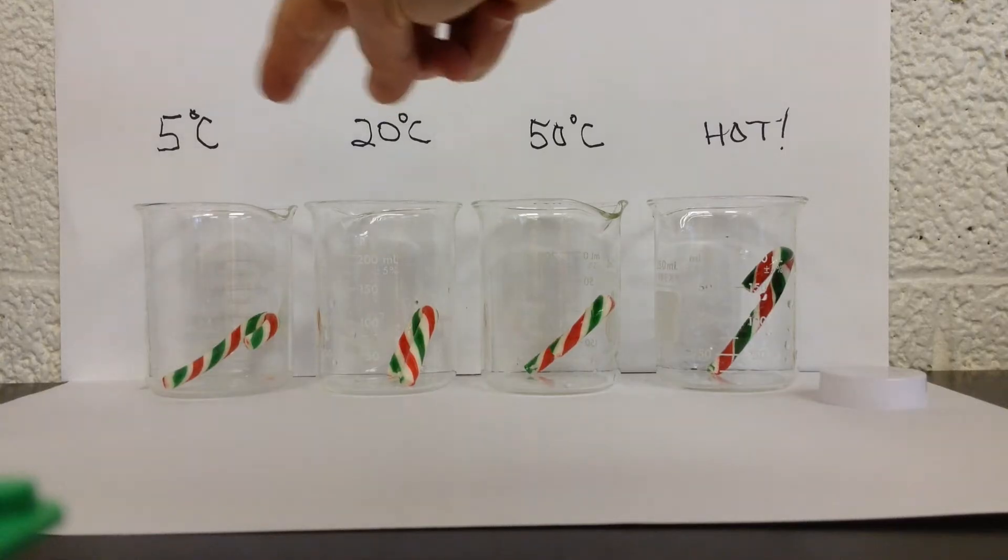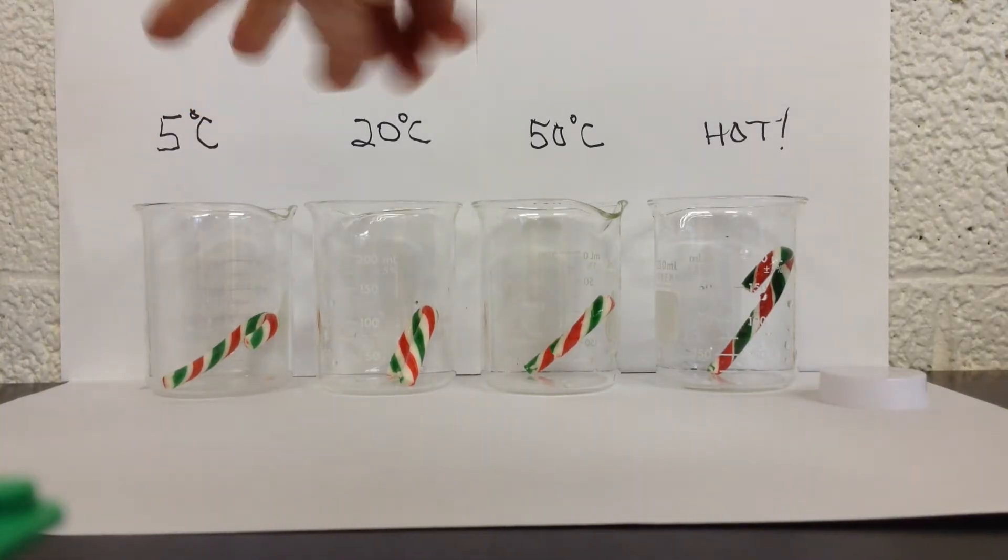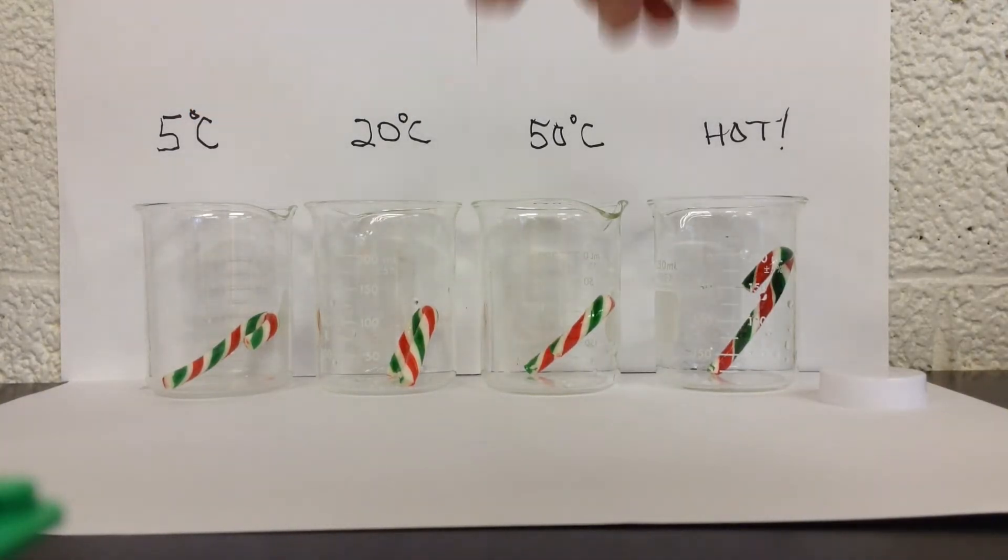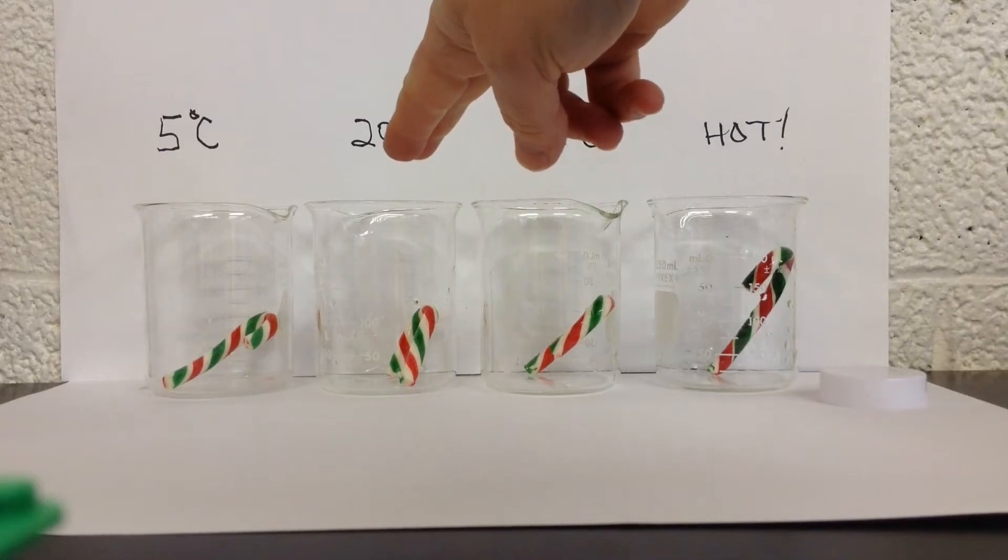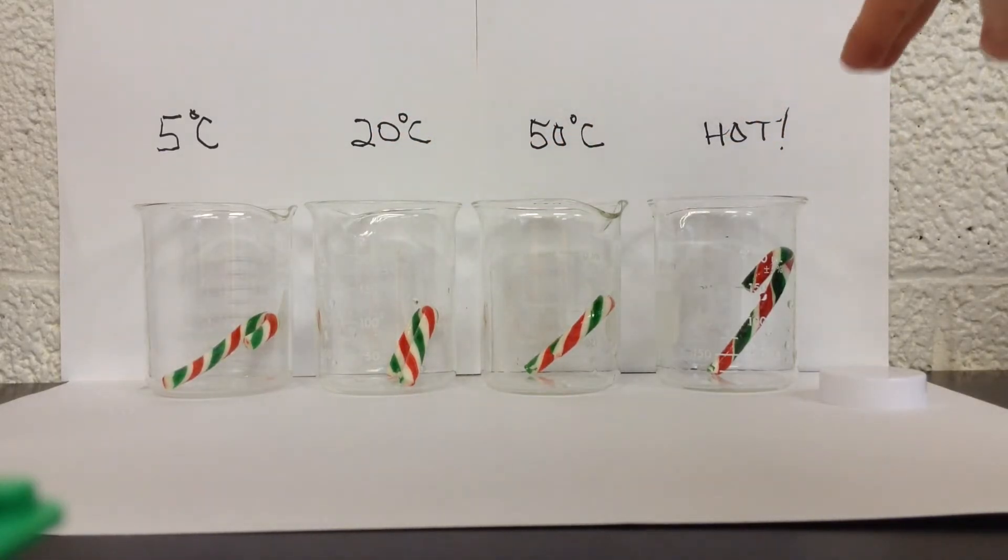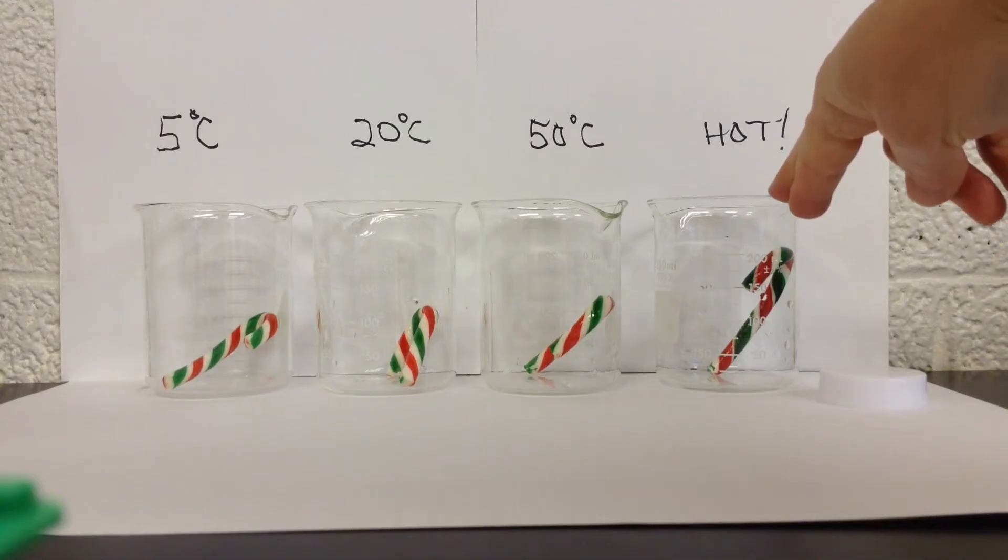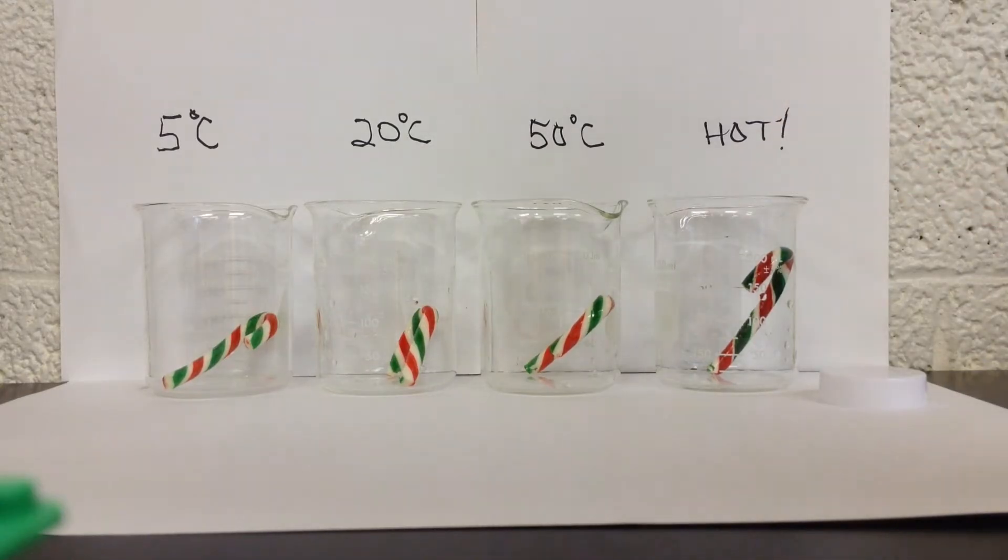I've got 5 degrees Celsius, that's usually about what ice water ends up as. Tap water straight from the tap, hot tap water, and then finally water from the kettle that's just come off the boil.